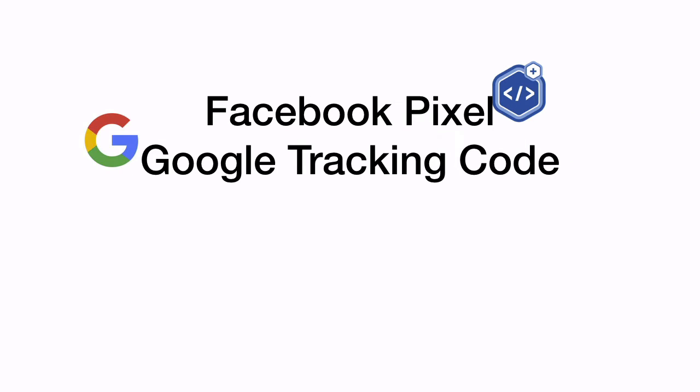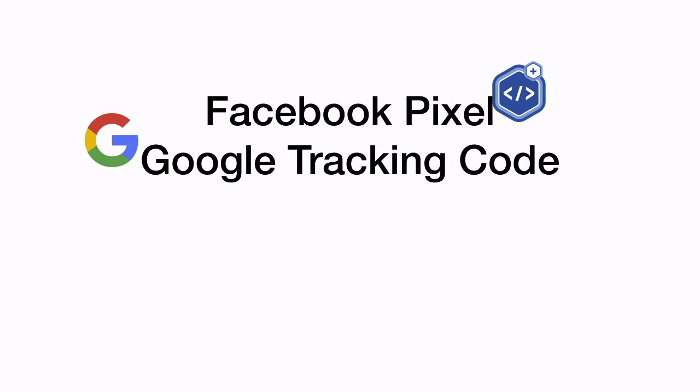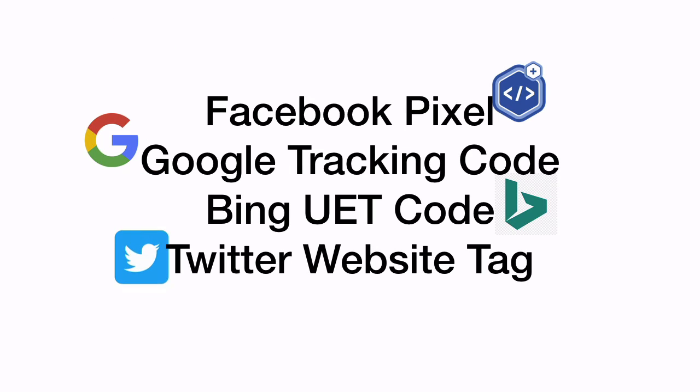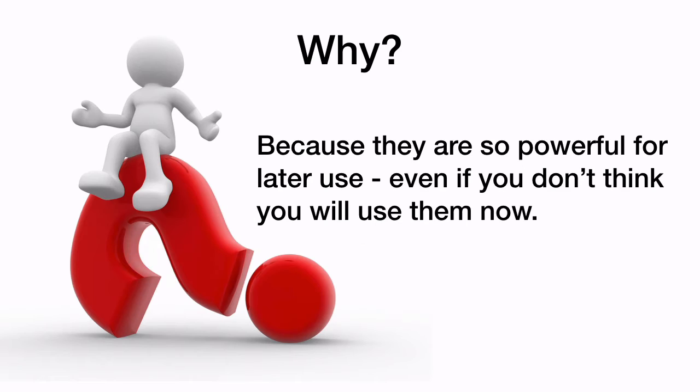The answer is simple: it takes seven to ten interactions with a prospect before they'll take action. So the things we need to do are: put our Facebook pixel in, put the Google tracking code in. You could even put the UET code from Bing — they've all just got different names for pixels and tracking codes — and there's also one for Twitter. The two big ones are the Facebook pixel and Google tracking code, and the Twitter website tag is a pretty good one as well, depending on your audience.